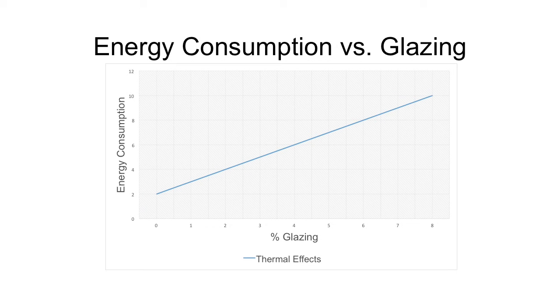Very simplistically, from a thermal perspective, the more glazing we have, the higher energy consumption. Because as we have more glazing, glazing typically is not as high performing as the opaque portions of the envelope, and so we've got increased heat loss during the winter, increased heat gain during the summer, as well as increased heat gain from transmission and through direct solar heat gain through the glazing. So pretty linear: as we get more glazing, more energy consumption.